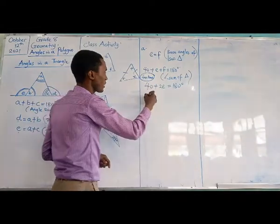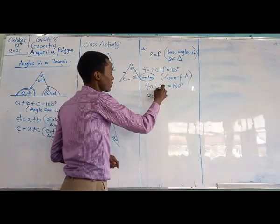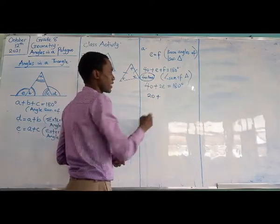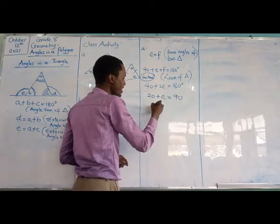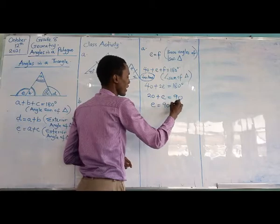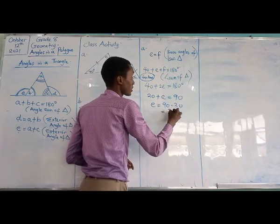So I would rather say 40 divided by 2 is 20, 2e divided by 2 is e, 180 divided by 2 is 90. And then e will be equal to 90 minus 20, and that is 70 degrees.